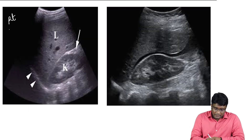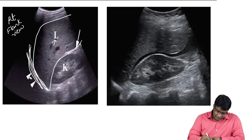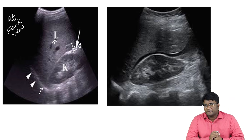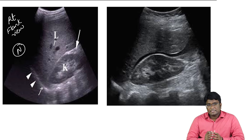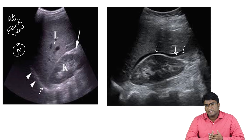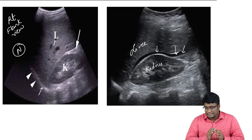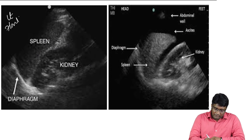On a right flank view, you can see the margins of the liver, the diaphragm as a white area, the parenchyma of the liver, and the kidney. The Morrison's pouch or hepatorenal space is visible here. In a normal right flank view, no collection is seen. If there is a perihepatic collection, a hypoechoic collection is visible in the Morrison's space between the liver and kidney — indicating a FAST positive result.